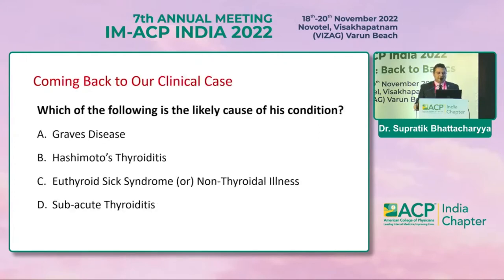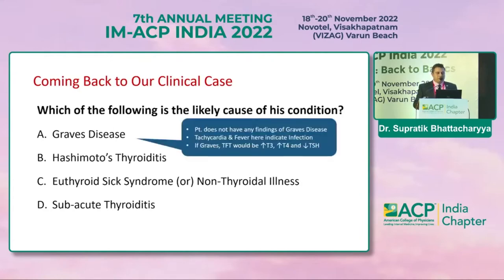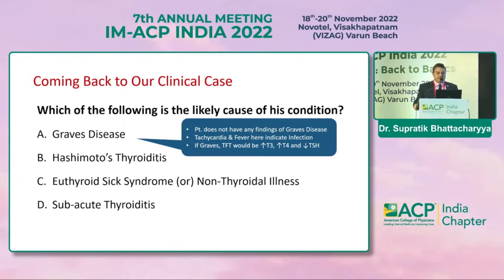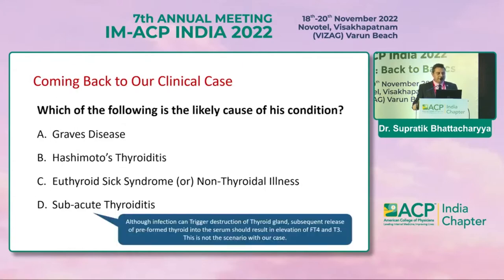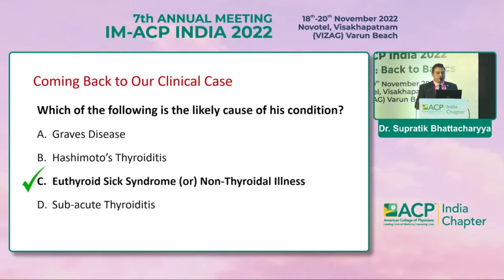Let's come back to the clinical case and rule out the options one by one. Graves' disease: the patient does not have typical findings, and the thyroid profile would show increased T3 and T4 with suppressed TSH, which we don't find here. Hashimoto's thyroiditis: the patient's TSH is borderline low, not compatible with Hashimoto's where TSH should be elevated. Subacute thyroiditis: infection can trigger destruction of the thyroid gland and transiently result in elevation of free T4 and T3, but this doesn't fit the scenario either. Therefore, the final diagnosis is euthyroid sick syndrome or non-thyroidal illness.